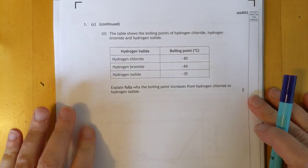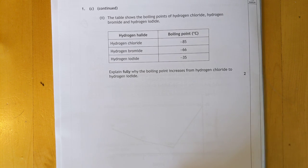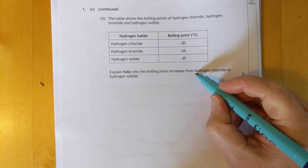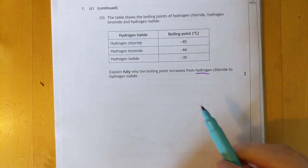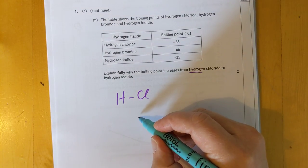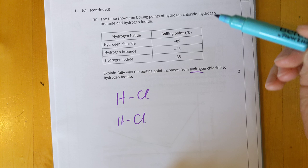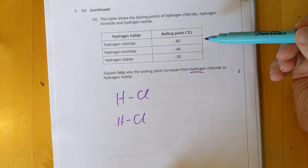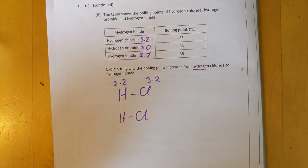It's an intermolecular force formed between hydrogen and nitrogen, oxygen and fluorine. Not totally sure what level of detail, but if it was my exam, I would have done something like that. The table shows the boiling points explain fully why the boiling point increases from hydrogen chloride to hydrogen iodide. This is all quite confusing. These are tough-ish questions.